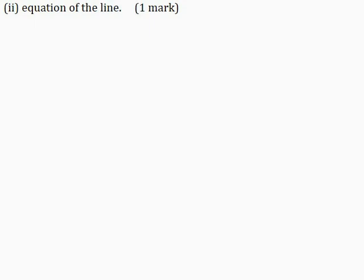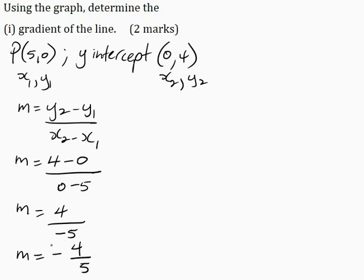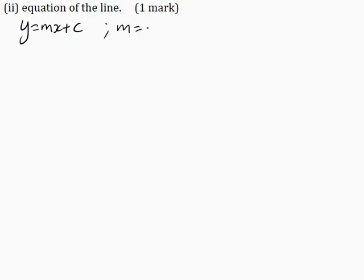Part 2: determine the equation of the line for one mark. The general equation of a straight line is y is equal to mx plus c, where m is the gradient and c is the y-intercept. From Part B1, the gradient is minus 4 over 5. The y intercept is (0, 4), meaning when x is 0, y is equal to 4, so c is equal to 4. Substituting m and c: y is equal to minus 4 over 5 times x plus 4.